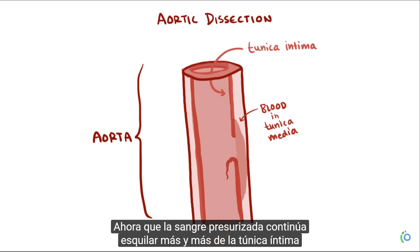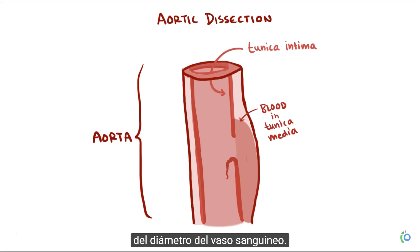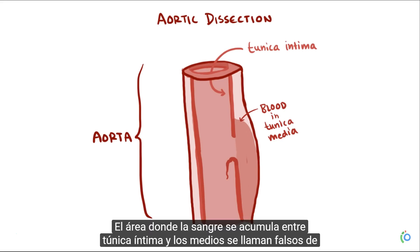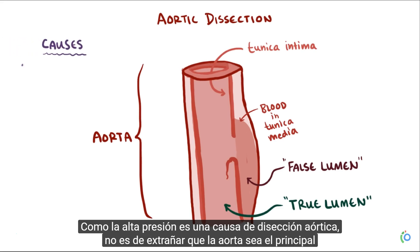As the high-pressured blood continues to shear more and more of the tunica intima off the tunica media, blood starts to pool between the two layers, increasing the outside diameter of the blood vessel. The area where blood collects between the tunica intima and the media is called a false lumen, and the true lumen is the regular lumen inside the blood vessel.